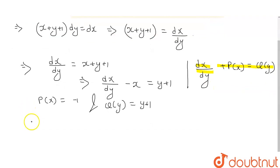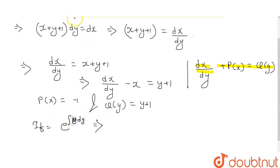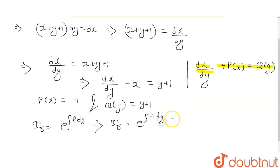How can we find the integrating factor? The integrating factor is e raised to the power of the integration of P dy — not y dy, it's P dy. So integration of P, where P is minus 1, gives e raised to the power minus y. This is the integrating factor.